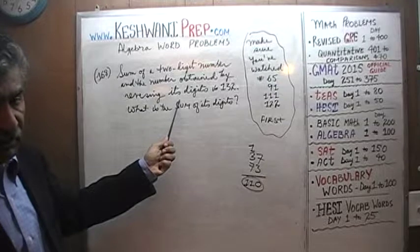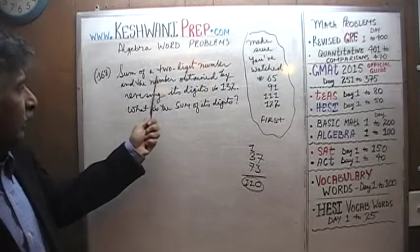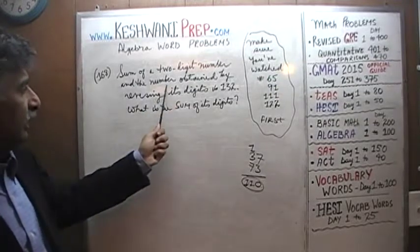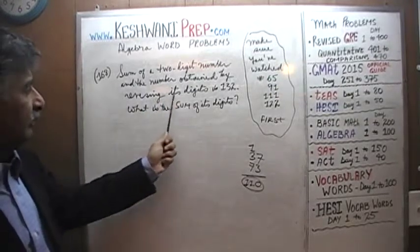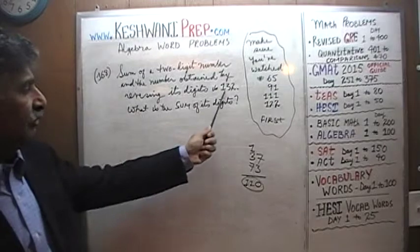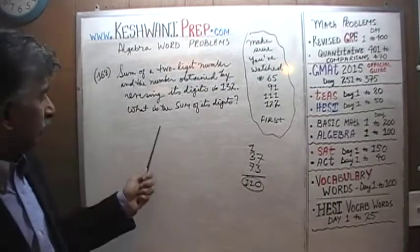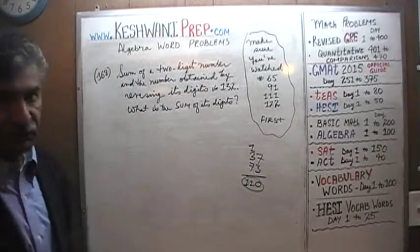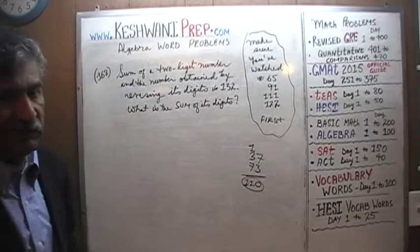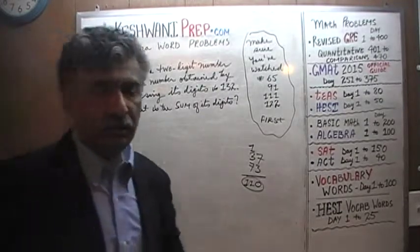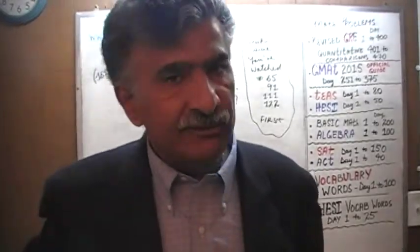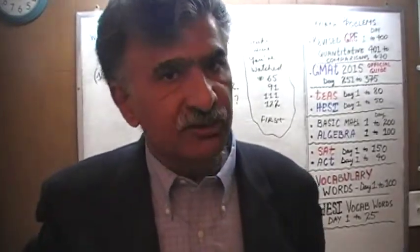The scenario we're dealing with is such that when we take the sum of the two-digit number and the number obtained by reversing the digits, it's 132. The question is, what's the sum of its digits? They're not asking for what that number is — that is not the question here. The question is: what is the sum of its digits?